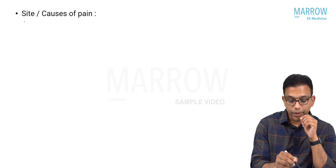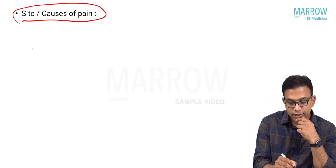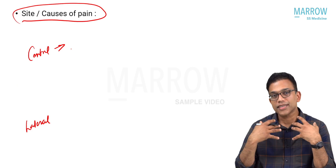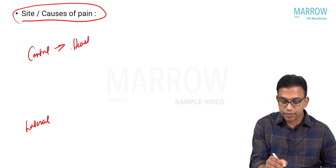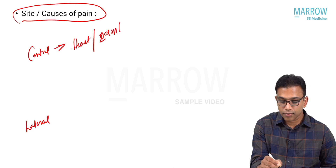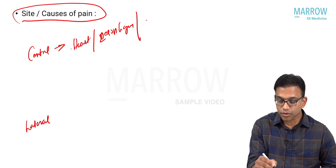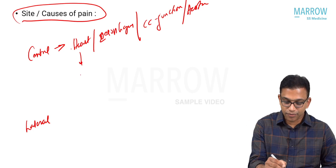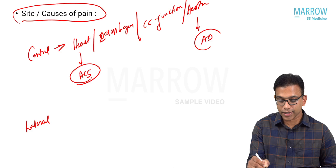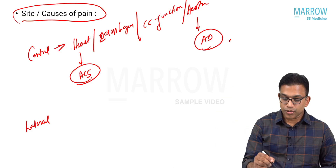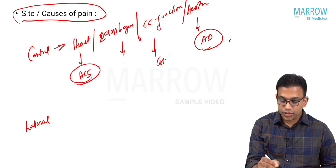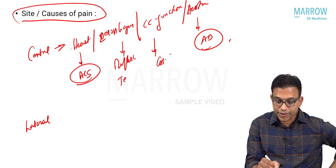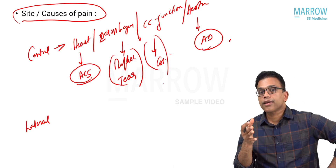The site of chest pain is important. Central chest pain involves structures such as the heart, esophagus, costochondral junction, and aorta. Causes of central chest pain include acute coronary syndrome, aortic dissection (which can radiate to the back), costochondritis, severe gastroesophageal reflux perceived as pain or heartburn, and esophageal tear after recurrent severe vomiting.